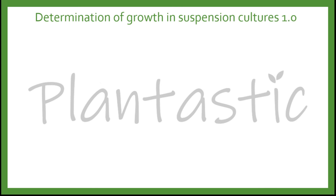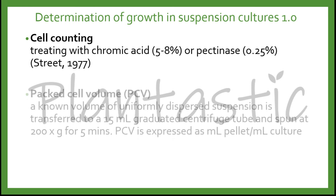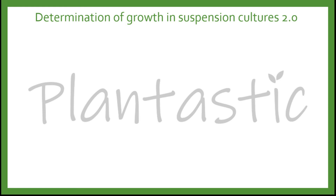How do we determine growth in suspension culture? First, we can use cell counting, treating with chromic acid 5–8% or pectinase at 0.25%. The second method is using packed cell volume (PCV), whereby a known volume of uniformly dispersed suspension is transferred to a 15 ml graduated centrifuge tube and spun at 200g for 5 minutes. PCV is expressed as ml pellet per ml culture. The third common method is cell fresh weight, done by washing the cells with distilled water to remove the medium, then draining under vacuum or drying with filter paper to obtain the net fresh weight of the callus.